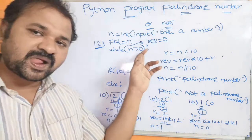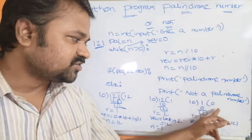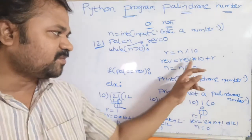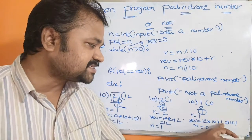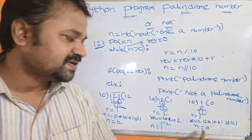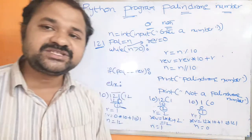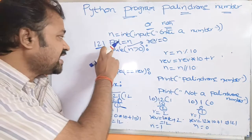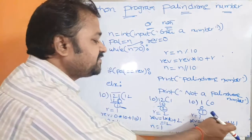Once again the condition is true, so the body executes. r = 1 % 10 = 1. Rev = rev * 10 + r. The previous value of rev is 12. So rev = 12 * 10 + 1 = 121. Then n = 1 // 10 = 0. Now while 0 > 0 — the condition is false. The control comes out of the while loop. The value of pal is 121 and the value of rev is 121.